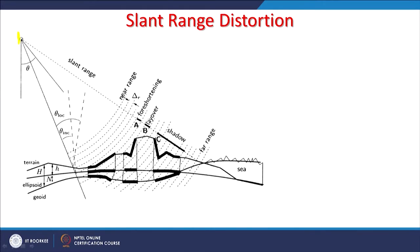One condition in microwave remote sensing is that it is not nadir viewing — it is oblique or slant remote sensing. Therefore, if the sensors are looking sideways there will be some problems, especially associated with hilly terrain. This is what we put in the category of slant range distortion. We can see that this is the sensor, and when the pulse is sent, the terrain is also shown here. If there is a hill, first of all there will be a problem about the shadow, because one side of the hill is illuminated whereas the other side is not.